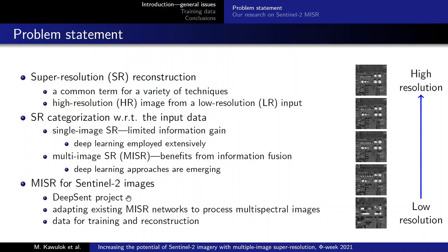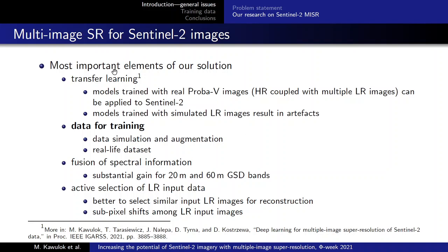The most important elements of our solution are as follows. First, we focused on transfer learning, in which we exploited networks prepared for super-resolving ProperV images. We trained them with real-life ProperV images and applied them to Sentinel-2 in a bandwise manner. This occurred to be much better than when the models were trained with simulated low-resolution images, as that scenario resulted in some artifacts.